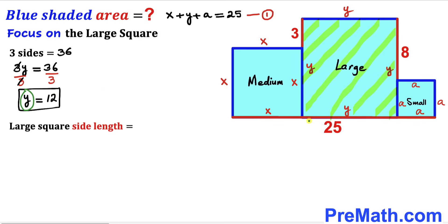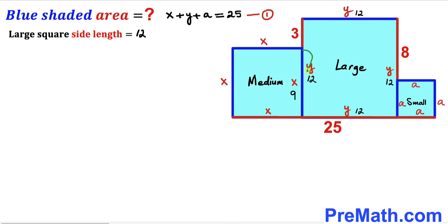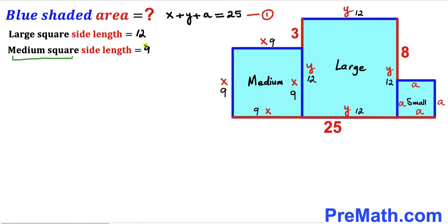Since y represents the side length of the large square, the large square's side length is 12, so y equals 12 across the board. Now we can see the large square side length is 12 and this tiny segment is 3, so this segment length is 12 minus 3 equals 9. Therefore our medium square side length turns out to be x equals 9.